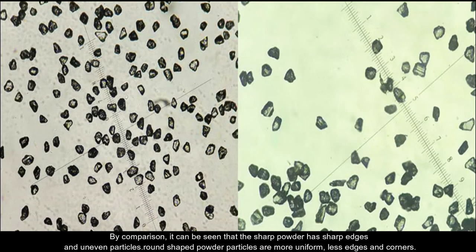By comparison, it can be seen that the sharp powder has sharp edges and uneven particles. Round-shaped powder particles are more uniform, less edges and corners.